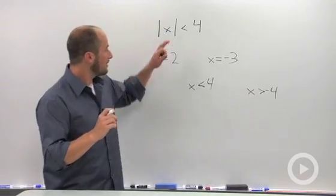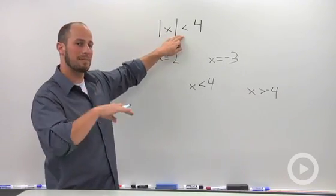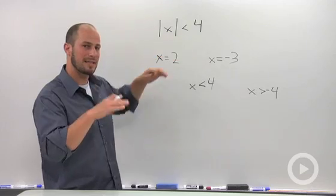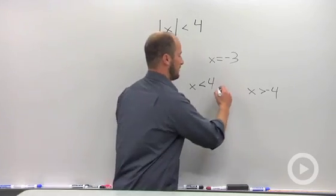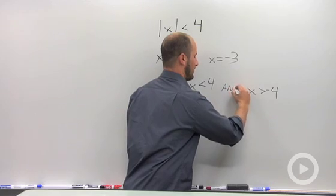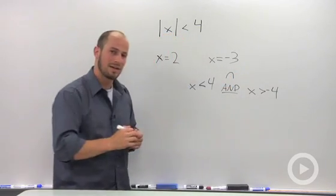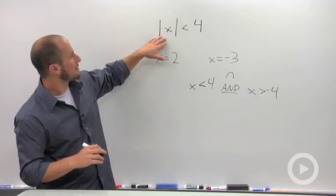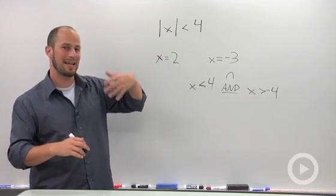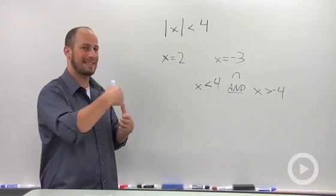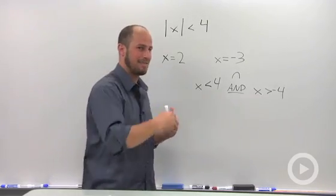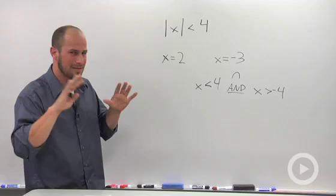The difference with these from when the absolute value is greater than is this now turns into an intersection, this turns into an AND statement. Remember that absolute value is less than is similar to AND. So less than, less than, AND statement. A little weird way I remember it, whatever works for you.